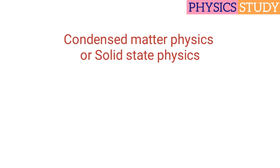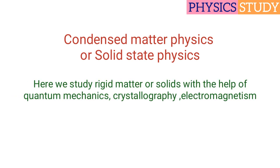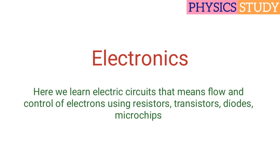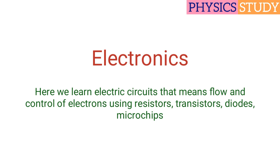Condensed Matter Physics, or Solid State Physics. Here we study rigid matter or solids with the help of quantum mechanics, crystallography, electromagnetism. Electronics. Here we learn electric circuits, that means flow and control of electrons using resistors, transistors, diodes, microchips.